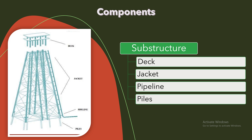When it comes to the substructure, it contains a deck at the top, then a jacket — steel jackets are vertical sections made of tubular steel members and are usually piled into the seabed. Then we have marine pipelines, which transport oil and gas from subsea wells to the platform and subsequently from the platform to the coast for further processing and distribution. At the bottom, we have piles — strong columns or posts of metal or concrete pushed into the ground to support the jacket.